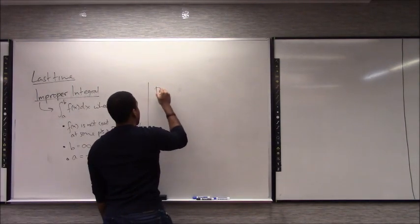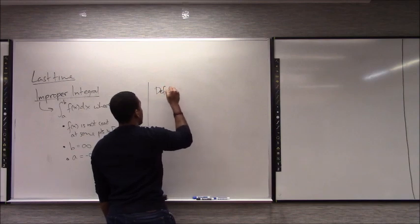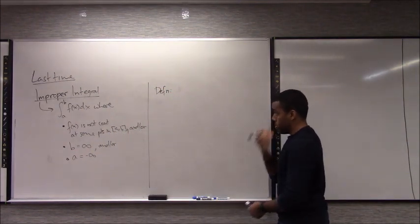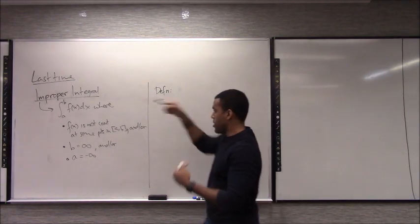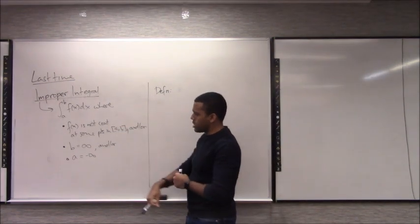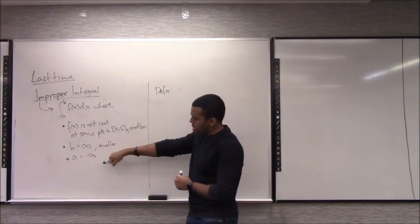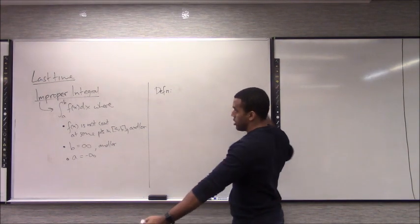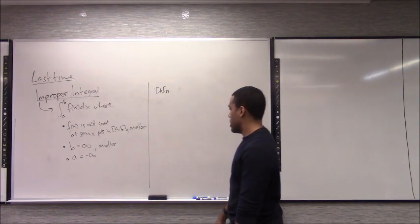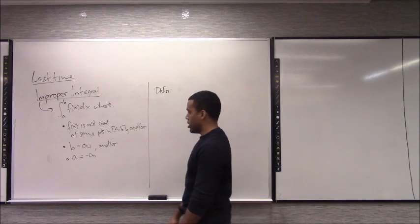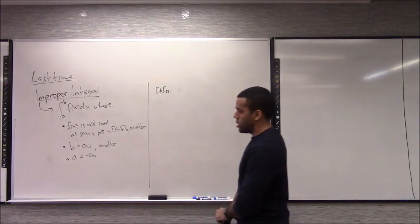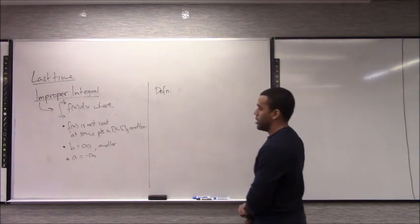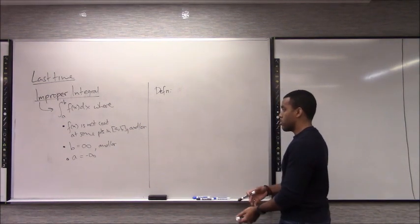I want to introduce another definition here. I told you how to actually computationally start dealing with these. Basically what you're going to do: figure out the bad points — where is the function discontinuous, or if your points are infinity or negative infinity. You want to break the integral up using the sum rule for integrals so that you only expose one bad point per integral, and you approach that point using limits, either from the right or from the left.